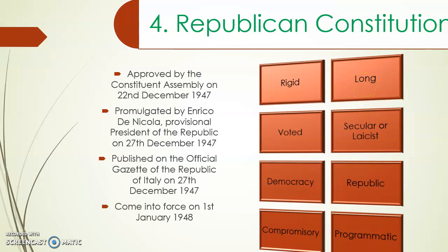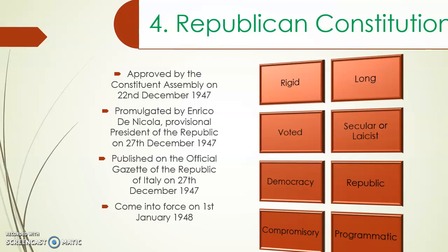It is a long constitution, containing dispositions about the form of state and the form of government. It is a secular or laicist constitution — there is no state religion; all religions are welcome and can be exercised in Italy. Republican and democratic principles, stated in the first article, cannot be changed, just like human rights. Finally, it is a programmatic constitution — it doesn't always state what will happen, but it directs the legislator on what it should do, and often requires laws to apply its principles.